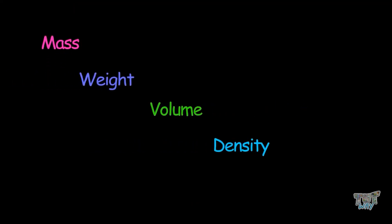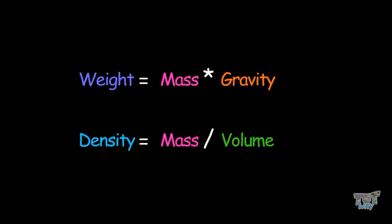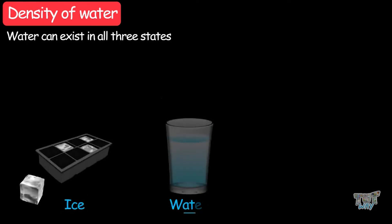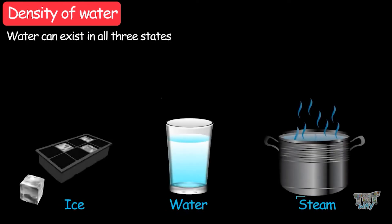So friends, now we know what is mass, weight, volume, density, and the relationship between all these parameters. Now let's learn about the density of water. We know that water can exist in all three states: ice, water, as well as steam — the gaseous form. Now which state of water has the greatest density?